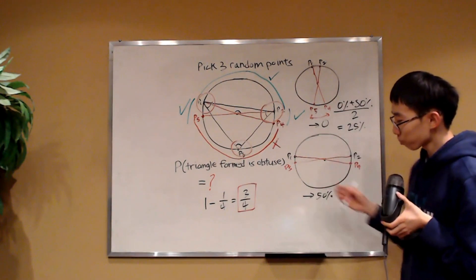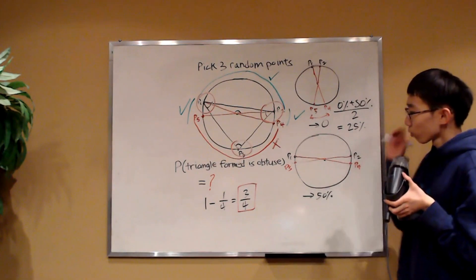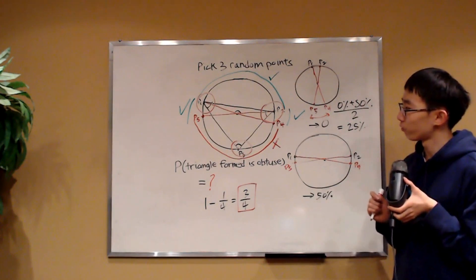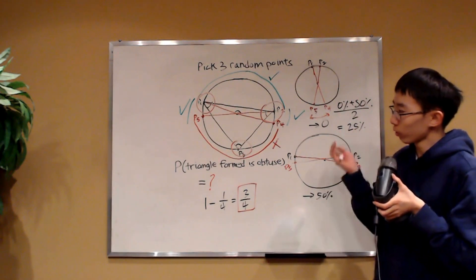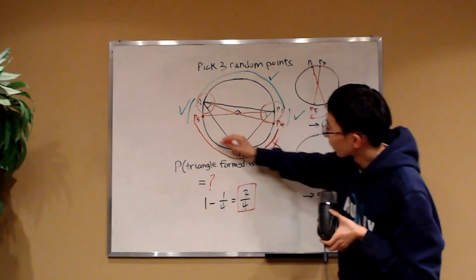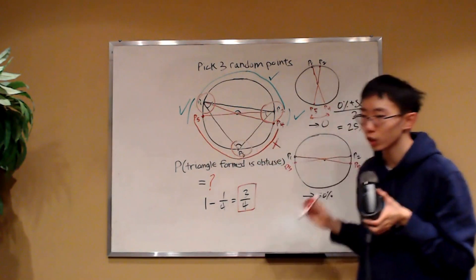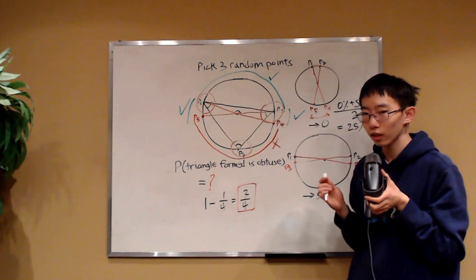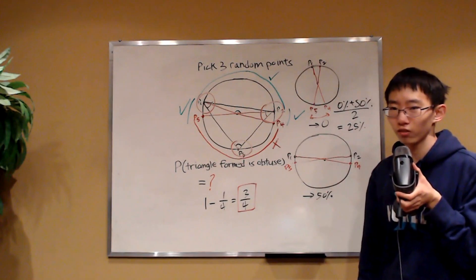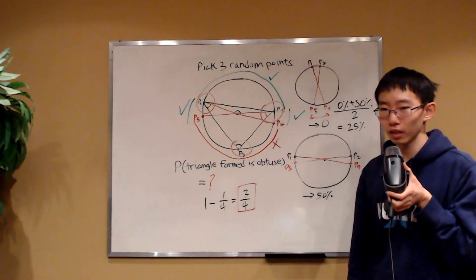So 3/4 is our answer. While this answer might be satisfying on its own, notice that throughout the entire problem we had to consider very special placements of the points. When P3 was in the major arc from P2 to P1, we had no barriers — we had to generate P4 and P5 based on wishful thinking. Anyway, thank you very much for watching. I hope you found this video interesting. Please consider dropping a like and subscribing. Thank you very much. Bye.